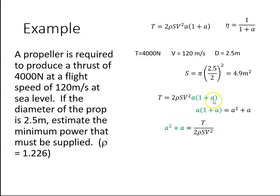Just rearranging this equation, a squared plus a is equal to the thrust divided by 2 rho S V squared. When I plug the values in, that works out to be 0.02032.